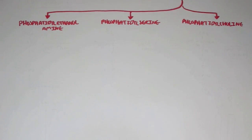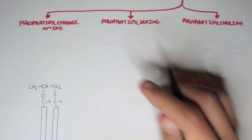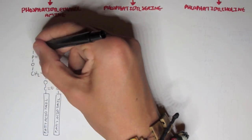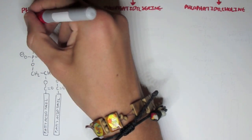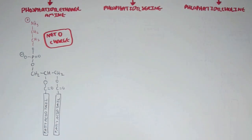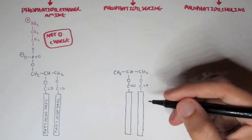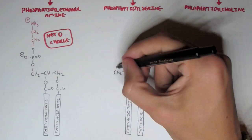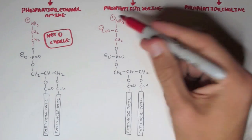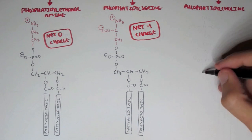Phosphatidylethanolamine has a glycerol backbone and a fatty acid tail. It contains a phosphate with a head group of amine and two carbons. The amino group is positively charged, giving this molecule a net zero charge because of the phosphate and the amine group. Phosphatidylserine also has a glycerol backbone and two fatty acid tails. As you can see, there are two negatively charged ions and one positive, giving it a net negative charge.